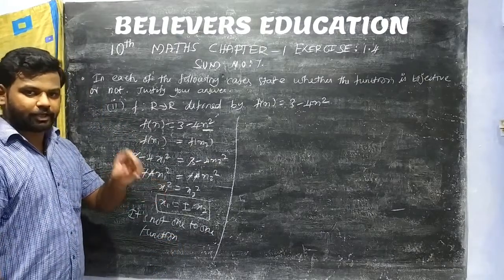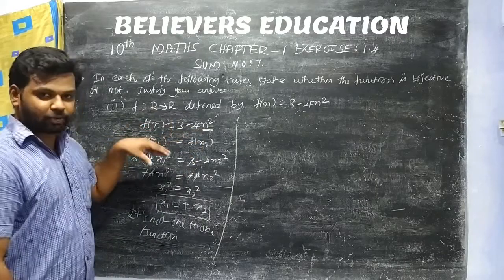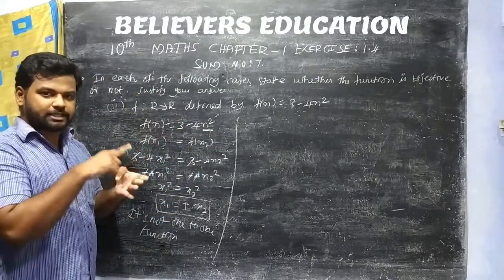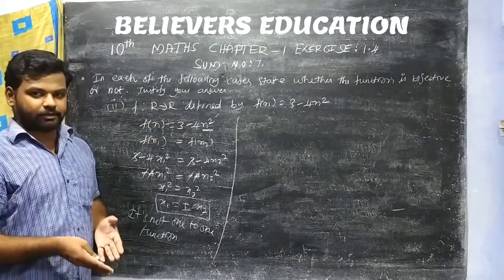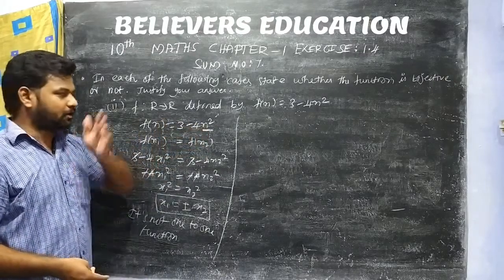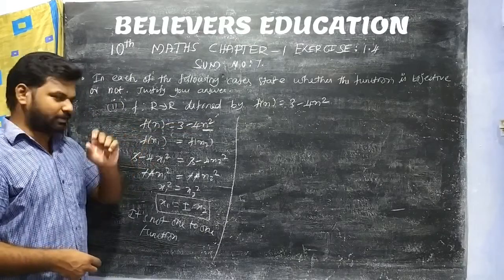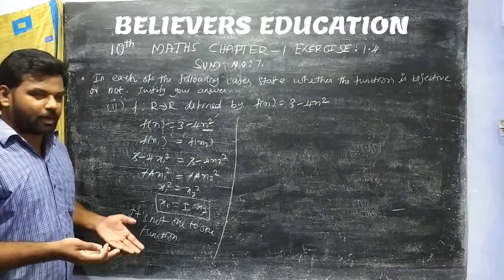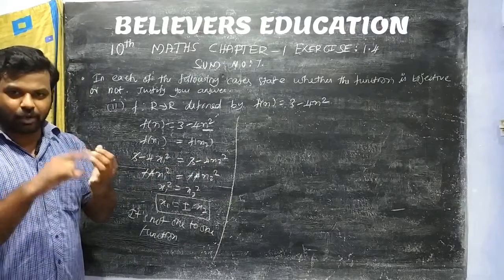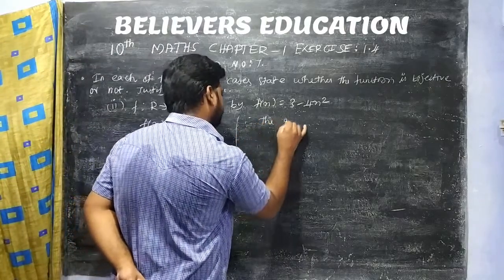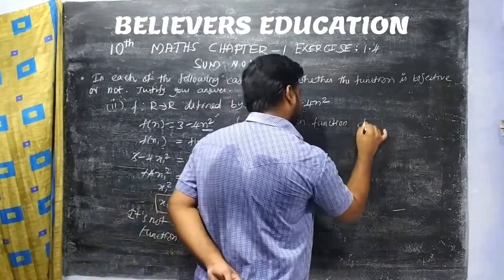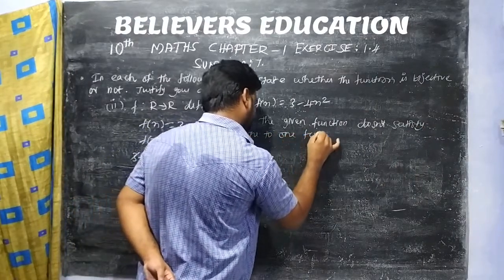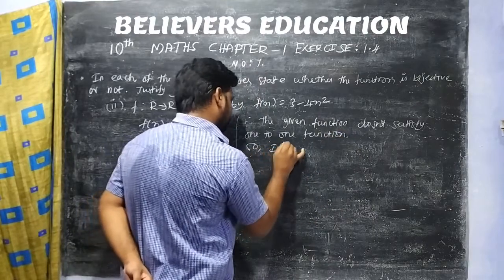We can simply identify that this is not a one-to-one function. The given function does not satisfy the one-to-one condition, so it is not a bijective function.